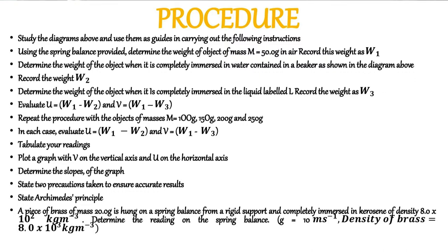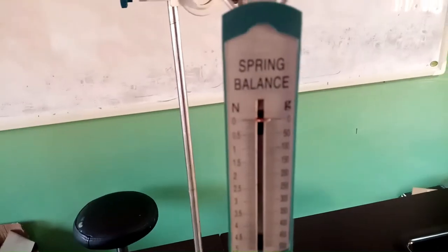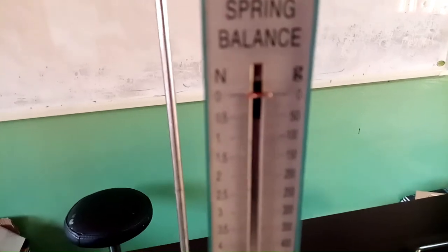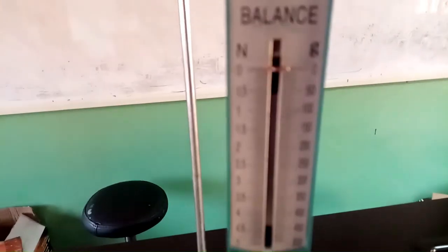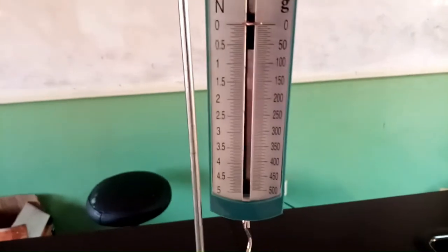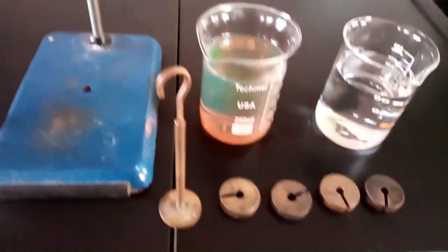The procedure is on your screen. Now that you have seen the procedure, we are going to follow it to get our results. The first thing we are going to do is to take note of the zero error in the spring balance. Check your spring balance — if it has a zero error, correct it; if it doesn't, you continue the experiment straightforward.